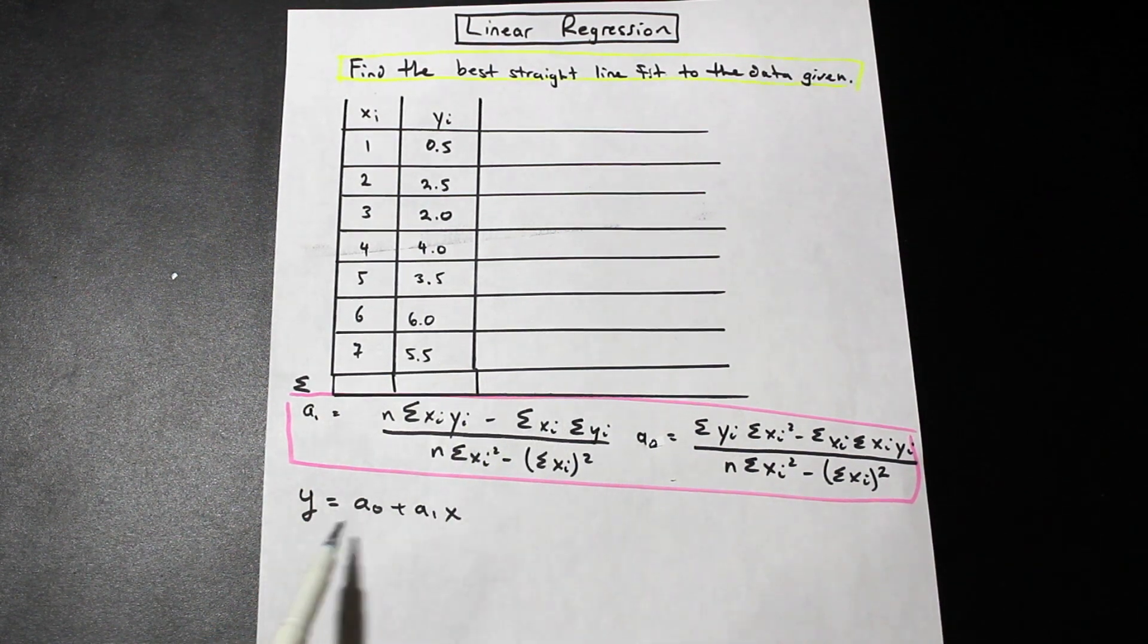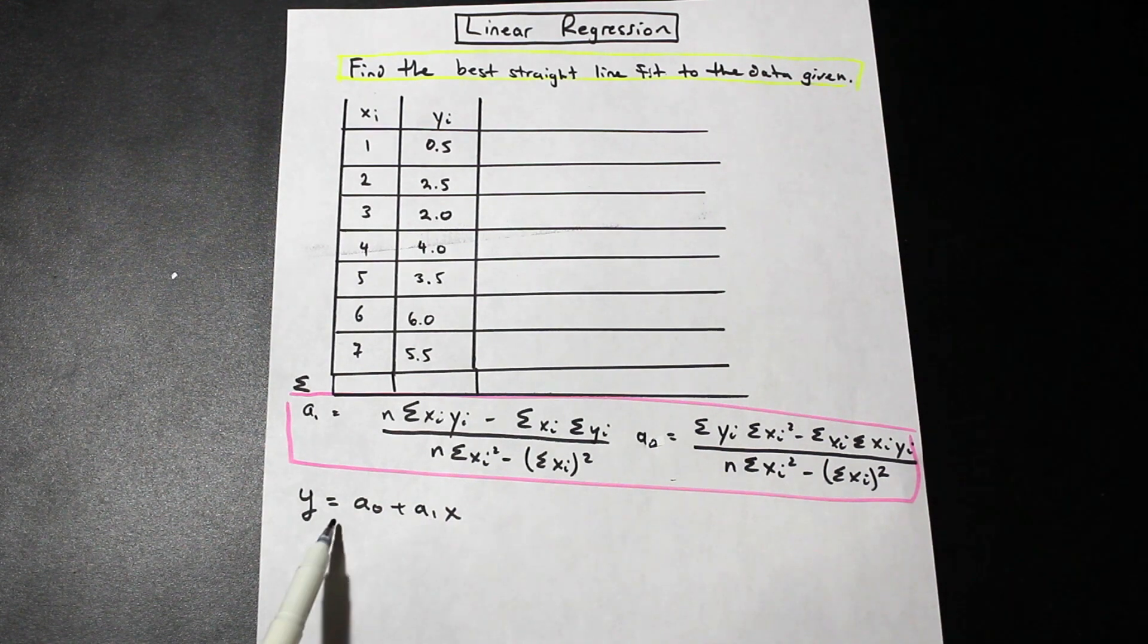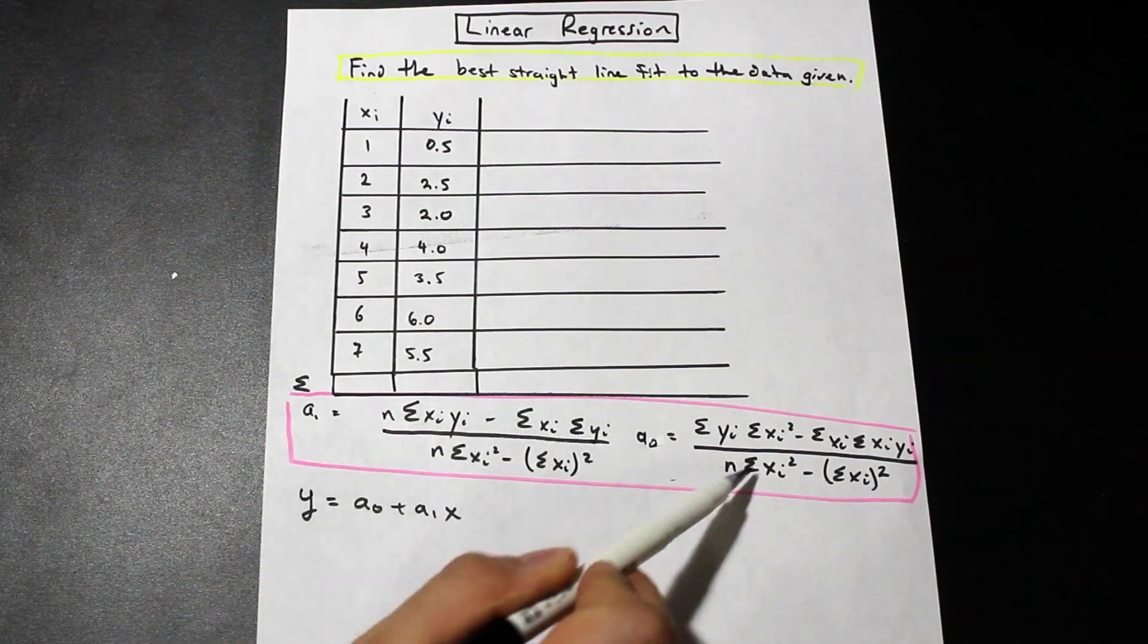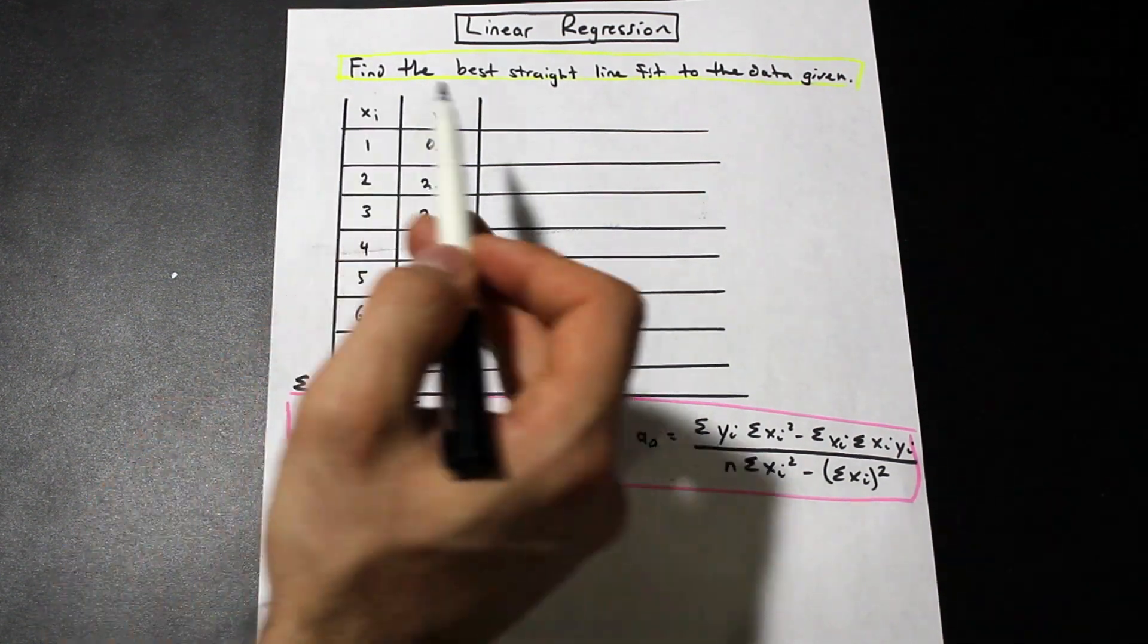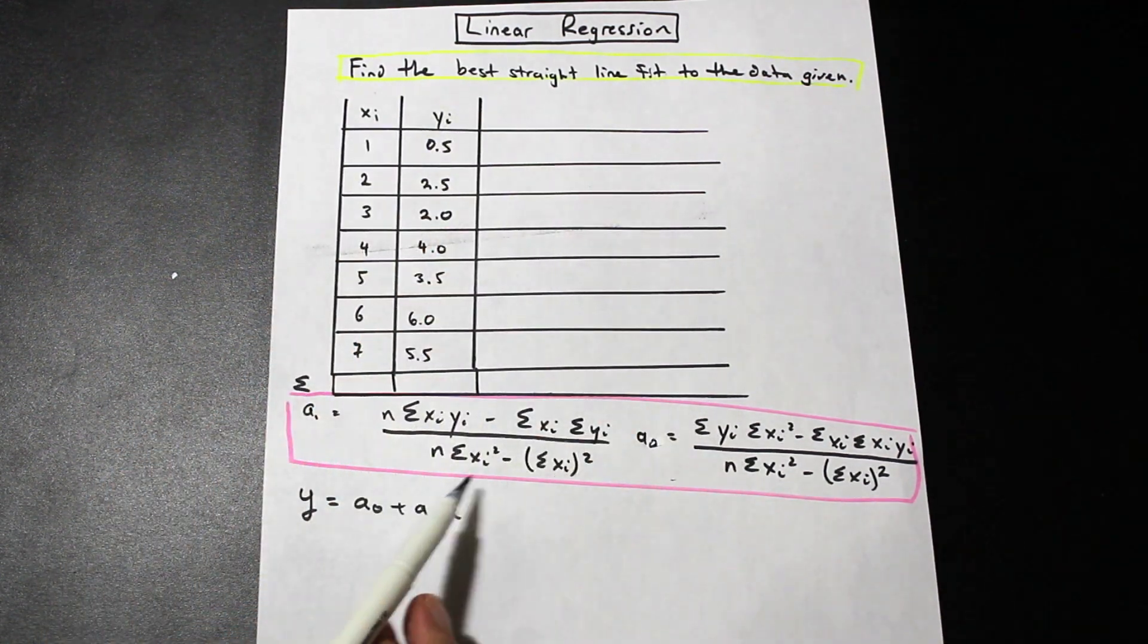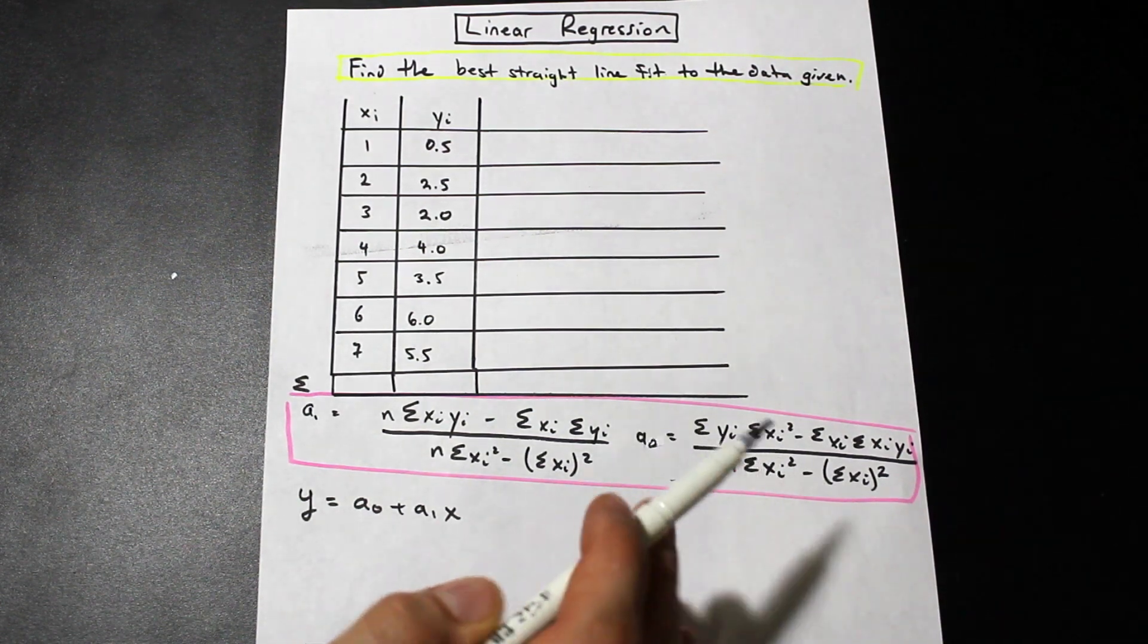Essentially, we're trying to find a0 and a1. Those are defined by these two formulas here. All we really have to do is make a table and find what's missing in these, and in these formulas here, plug them in and then get the values.